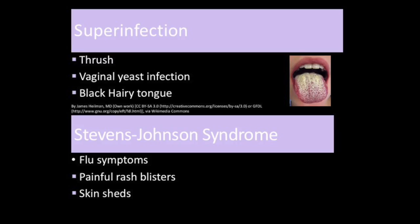Antibiotics destroy healthy bacteria in our bodies which help fight off infection and aid in digestion. When these healthy bacteria are destroyed, a super infection or a new infection can occur. Thrush, which is pictured here, is a white coating or white patches on the tongue, mouth, inner cheeks, and the back of the throat—this is a yeast infection of the mouth. Vaginal yeast infections and black hairy tongue are also super infections that can be caused by antibiotics.